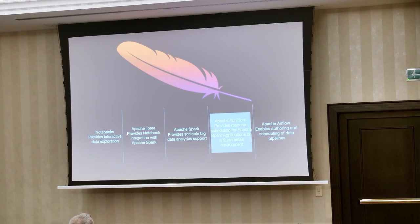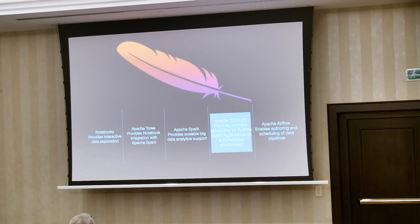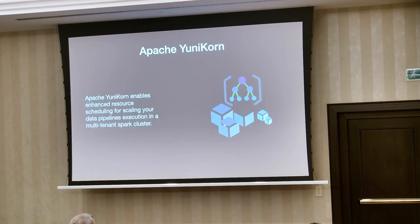Once you're starting to really build a platform with self-service and multi-tenancy — separating or isolating resources for different groups — using the Spark operator and Kubernetes scheduler alone won't give you those additional capabilities. So one of the things we integrated with is Apache Yunikorn as the scheduler. Apache Yunikorn enables enhanced resource scheduling, letting you scale data pipeline execution in a multi-tenant way, with the ability to separate different groups into queues.